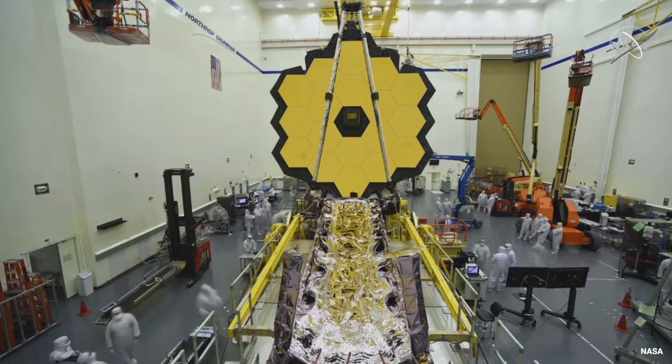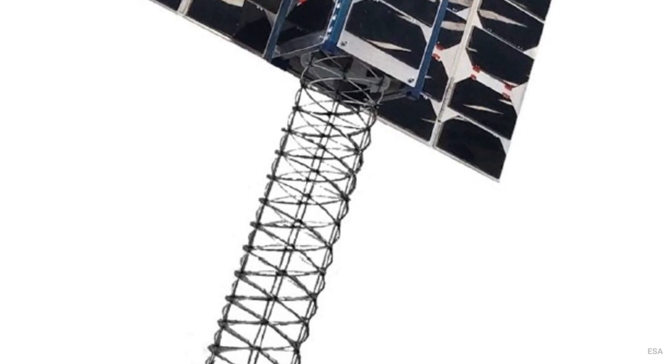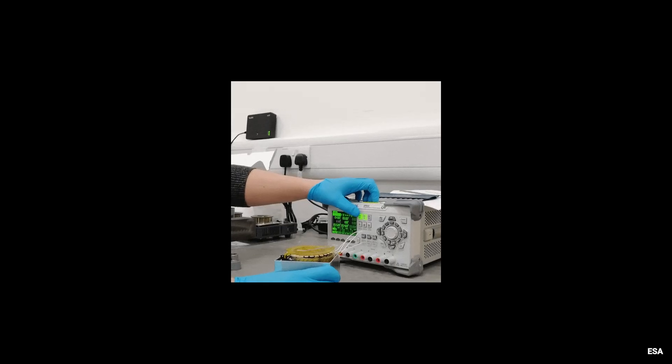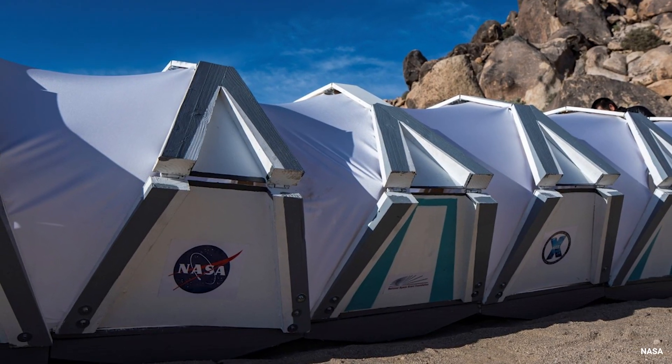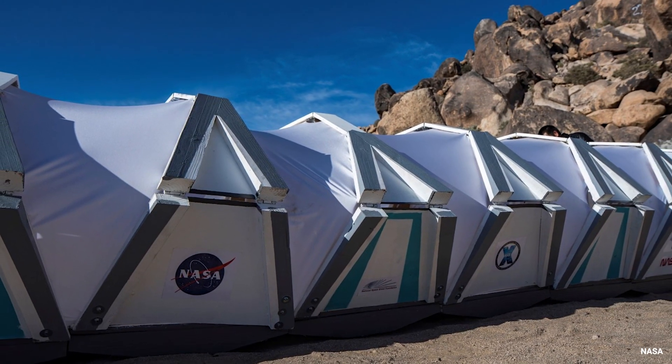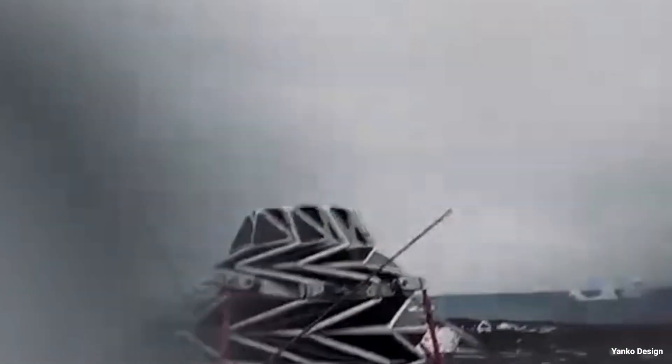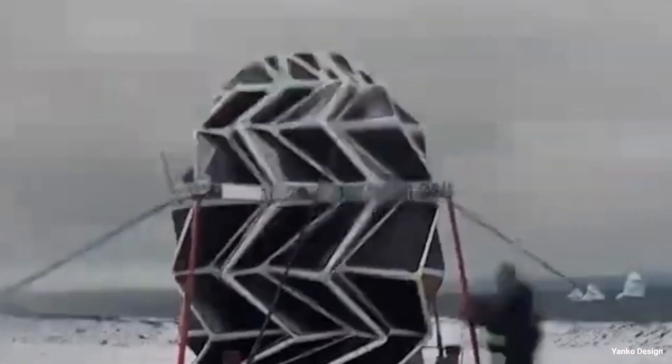Using folding patterns and flexible materials, solar arrays and antennas can be packed into small spaces pre-deployment. Origami-based lunar or Martian habitats can quickly and easily be assembled and disassembled, folded nicely into a spacecraft during transport.